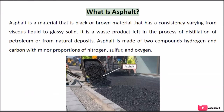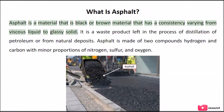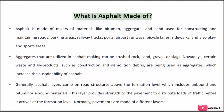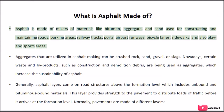What is asphalt? Asphalt is a black or brown material with a consistency varying from viscous liquid to glassy solid. It is a product left from the distillation of petroleum or from natural deposits. Asphalt is made of two compounds — hydrogen and carbon — with minor proportions of nitrogen, sulfur, and oxygen. Asphalt is made of a mixture of materials like bitumen, aggregate, and sand, and is used for constructing and maintaining roads, parking areas, railway tracks, ports, airport runways, bicycle lanes, sidewalks, and play and sports areas.